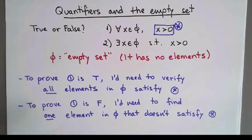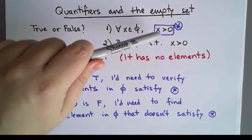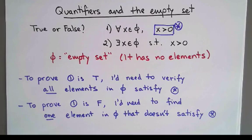If I wanted to prove it's false, I'm going to need to find one element that doesn't satisfy that. So which one of those two things can I do?